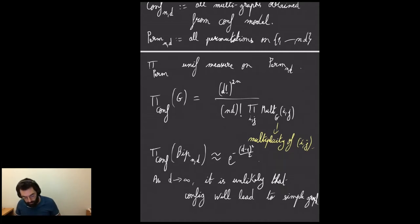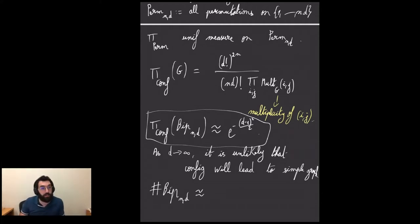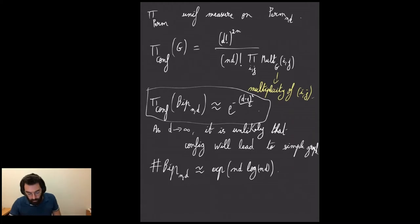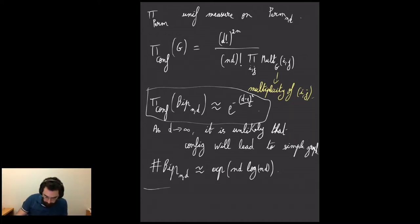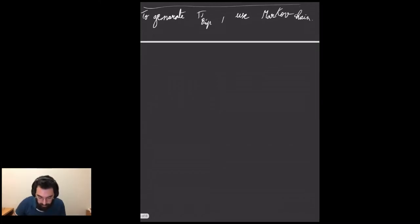Just for illustration, the size of the set of bipartite graphs is exponential in n — of order e^{nd log n}. We're not going to use the configuration model; instead we're going to use Markov chains to generate this measure.